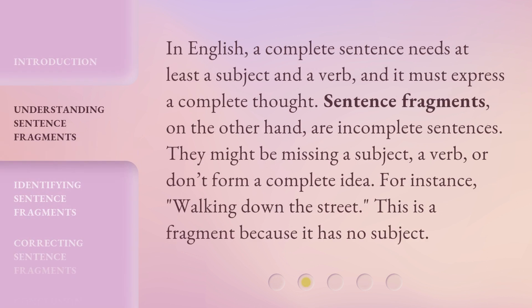In English, a complete sentence needs at least a subject and a verb, and it must express a complete thought. Sentence fragments, on the other hand, are incomplete sentences. They might be missing a subject, a verb, or don't form a complete idea. For instance, "walking down the street" is a fragment because it has no subject.